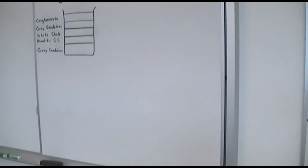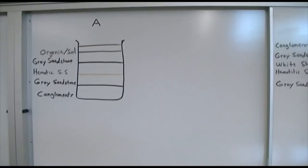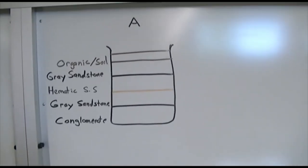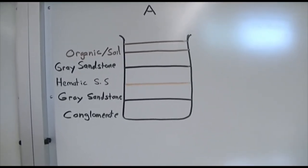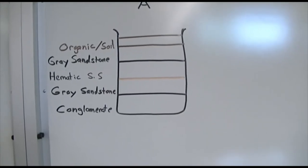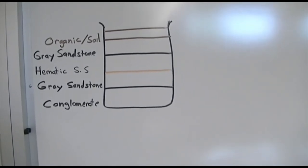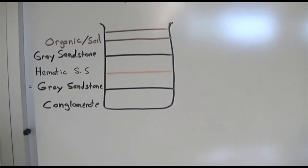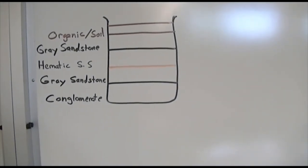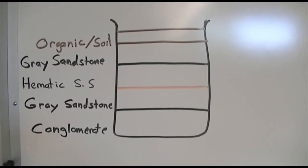For beaker A, the very top unit is organic material soil. Underlying that is a gray sandstone, then a hematitic sandstone, then another gray sandstone, and at the bottom a conglomerate. This is how your drawing of beaker A should look.